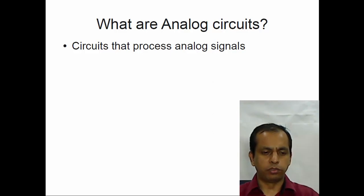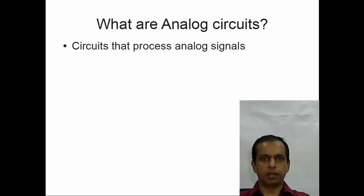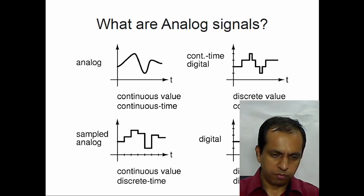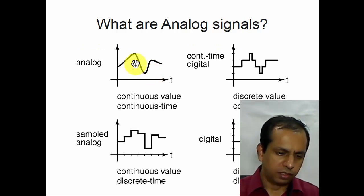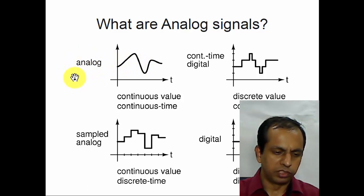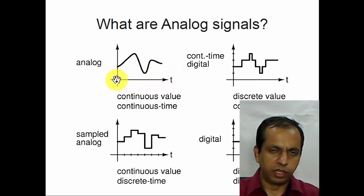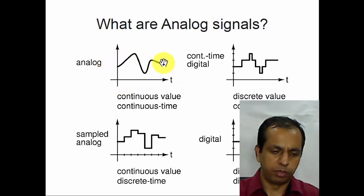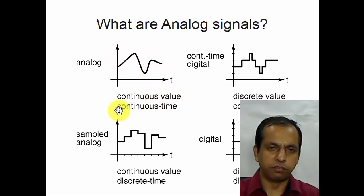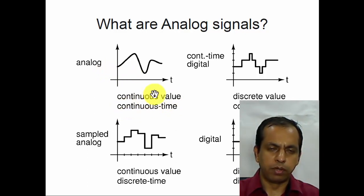What are analog circuits? Put very simply, they are circuits that process analog signals. Many of you may be familiar with different types of signals. At the top left, I have shown something labeled as analog. If you observe, there is some signal varying with time and the points are defined for every value of time. It is continuous in time, and the values can be anything along the y-axis — so it is continuous in amplitude. If it is continuous valued and defined for continuous time, then it is an analog signal, or more specifically, a continuous time analog signal.